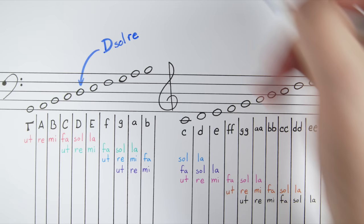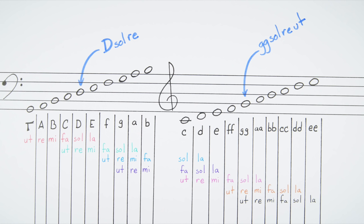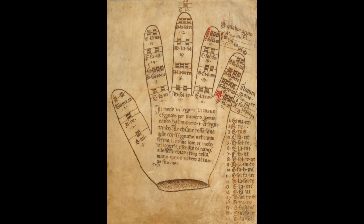For example, this D below middle C is called D Sol Re, and this G above middle C is called G Sol Re Ut. All of the notes followed this convention, beginning with the note name and then its positions in the hexachords. With this system, each note has a unique name.